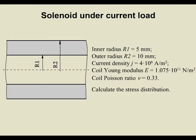Solenoid under current load. Inner radius R1: 5 millimeters. Outer radius R2: 10 millimeters. Current density: 4 times 10 to the 6 amperes per meter squared. Coil Young's modulus: 1.075 times 10 to the 11 newtons per meter squared. Coil Poisson ratio: 0.33.